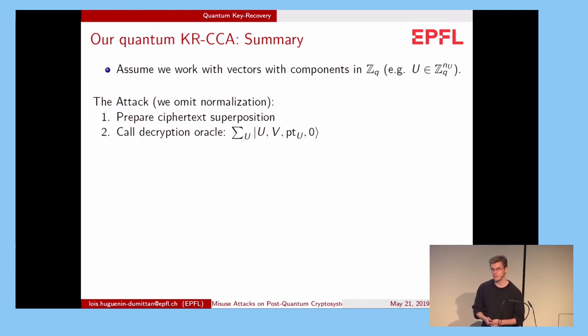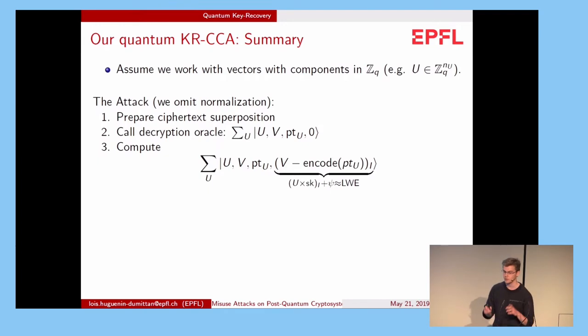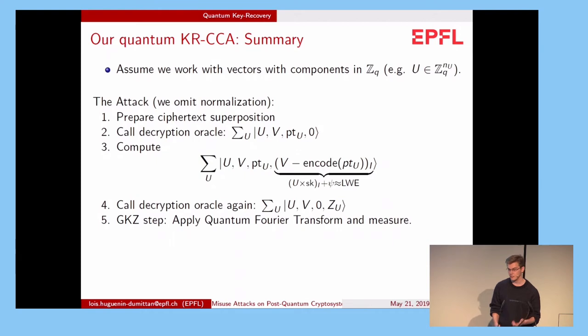First we prepare the ciphertext superposition as in the previous slide. And then we call the decryption oracle. In the third register, we get the corresponding plaintext. Then in the fourth register, we compute V minus the encoding of the plaintext, and we take some subset of that. Usually we take only one component. And if we do the computation, it is actually equal to the same subset of U times the secret key plus some noise psi. So it looks like a noisy sample. Then we call the decryption oracle again so we can clear the third register. This step is important to improve the probability of measurement at the end of the algorithm.